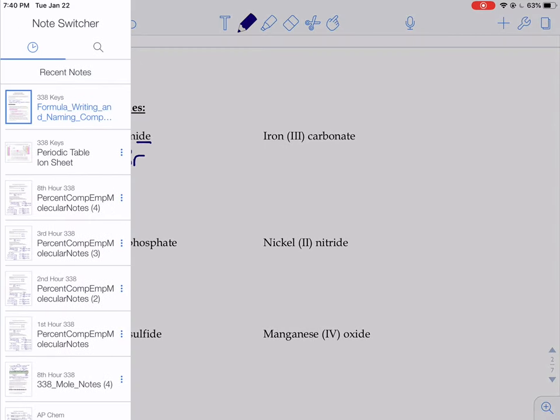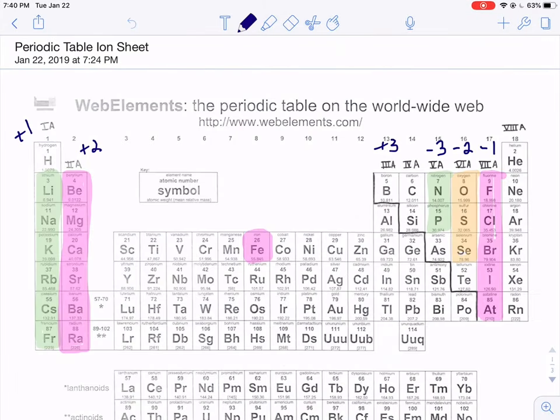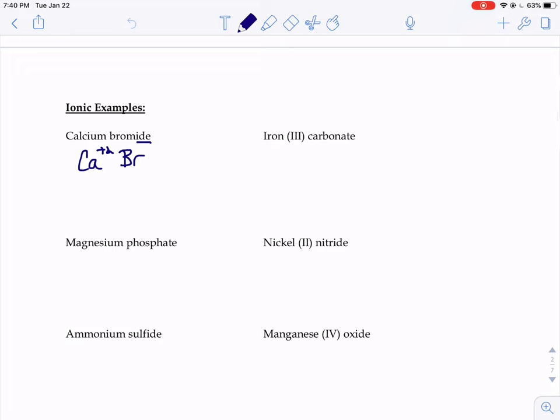But we need to figure out what the charge of that bromine would be when it's an ion form, when it's bromide, not bromine. So we look at our periodic table, find bromine. Neutral bromine has 35 electrons. Bromide, the ion, would have 36. One extra electron, so a charge of negative one. We'll put that here, right next to our bromide, negative one.